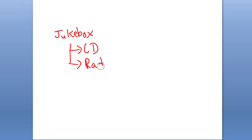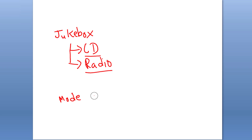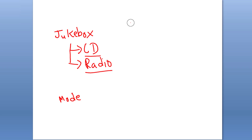Some jukeboxes also had the option to play radio. Since this jukebox has two modes, it is going to have these two classes as properties. We are also going to set a variable called mode which will be an enum with either CD or radio as its value, deciding which mode is currently active.